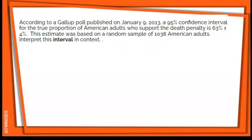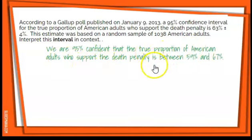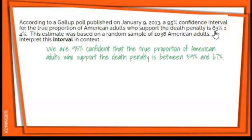We're going to use the framework. It will look like this: 'We are 95% confident that the true proportion of American adults who support the death penalty is between 59% and 67%.' Notice I have the confidence level mentioned first, then the parameter in context — 'the true proportion of American adults who support the death penalty.' Then 'it is between' followed by my minimum and maximum. I get those by taking 63 as the point estimate, subtracting 4% to get 59%, and adding 4% to get 67%.